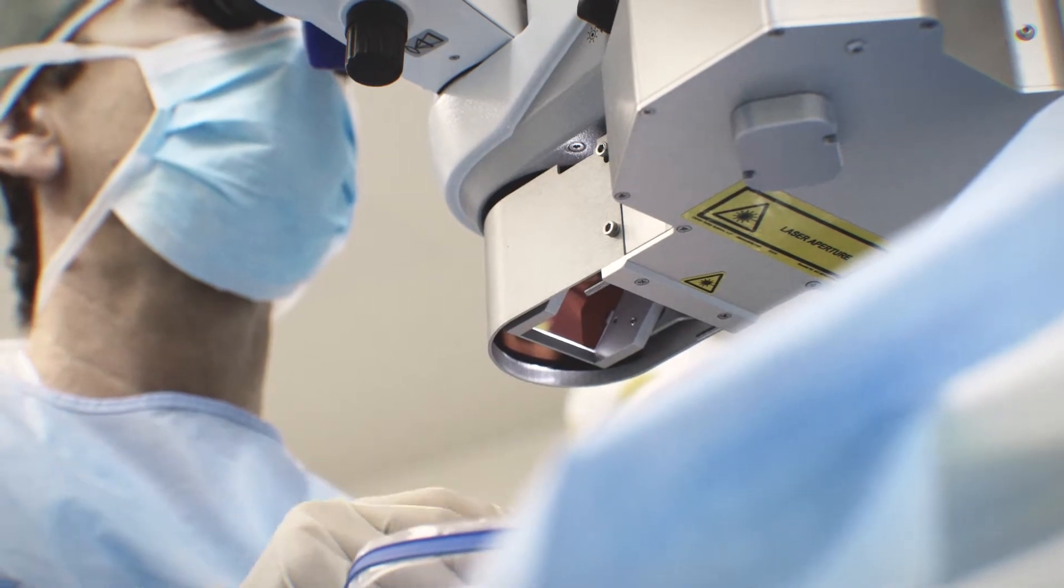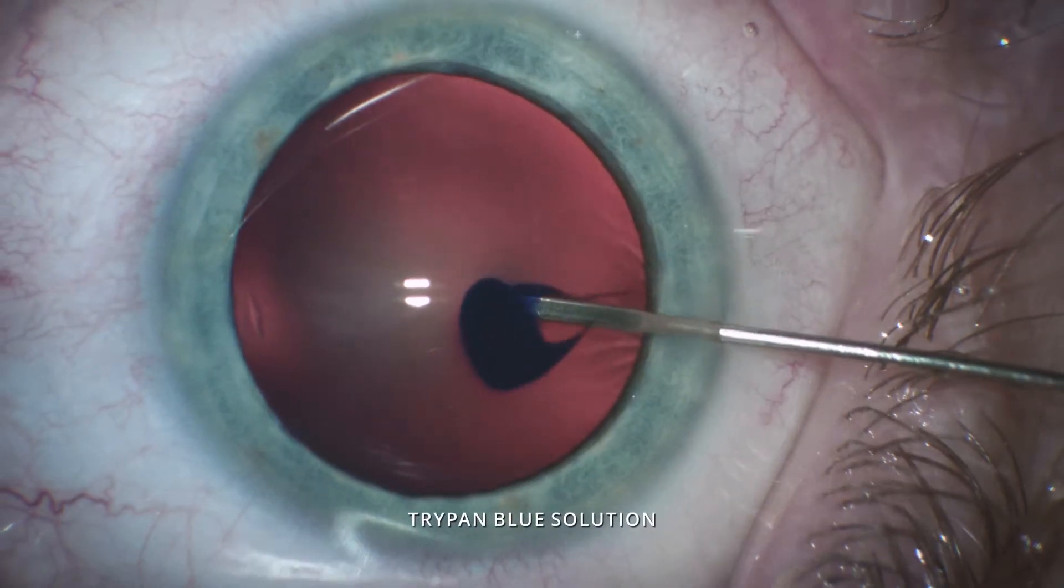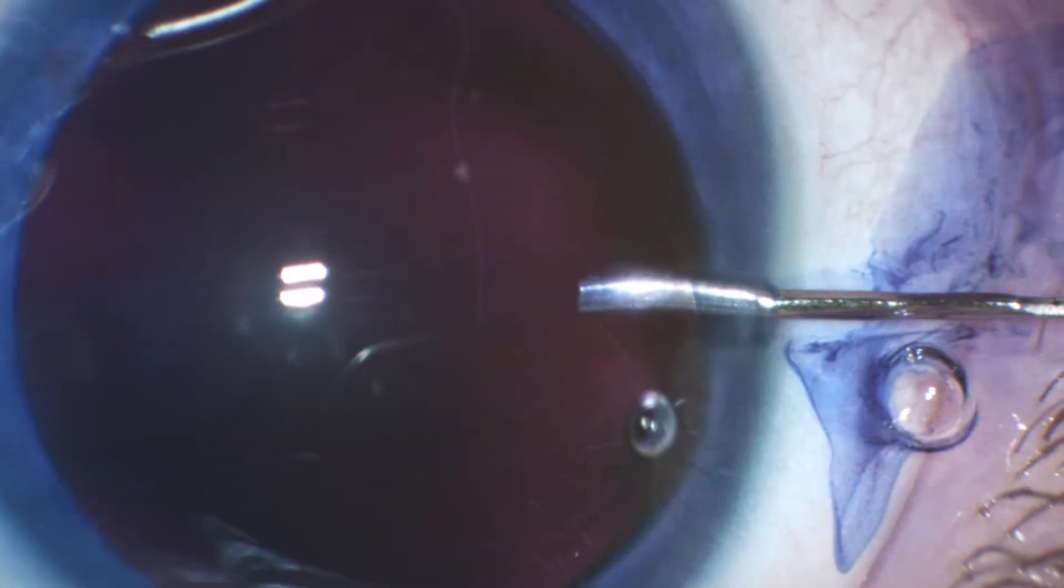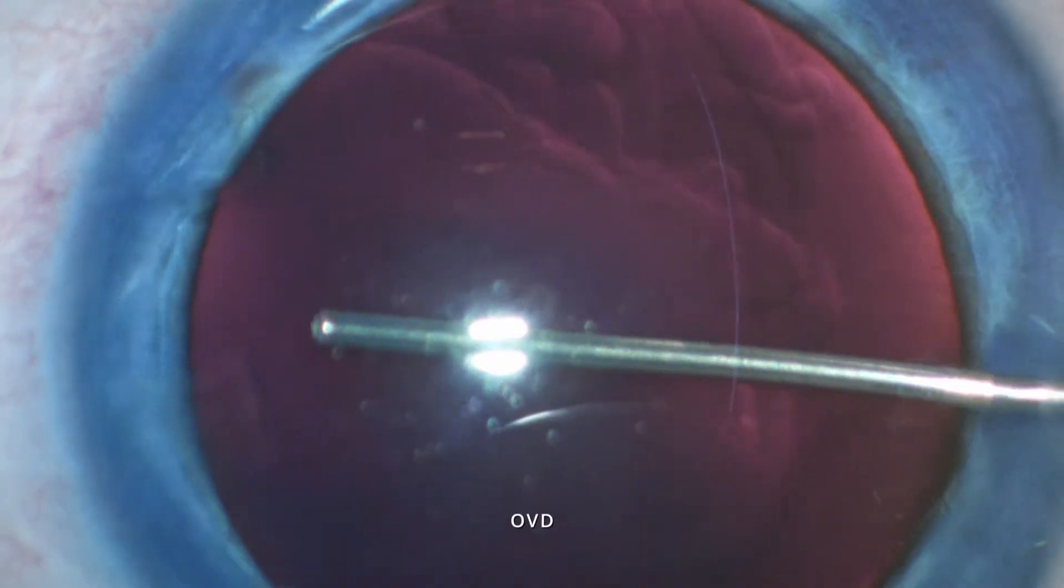How does it work? First of all, the anterior lens capsule is stained with a proprietary Trypan Blue solution. The dye is then washed out of the eye. The anterior chamber is filled with OVD.